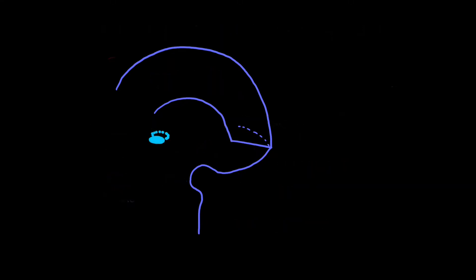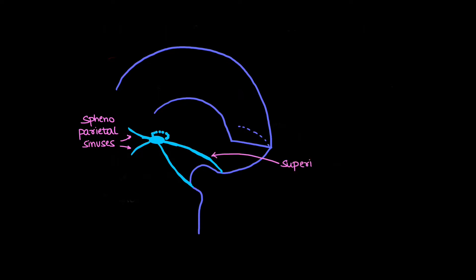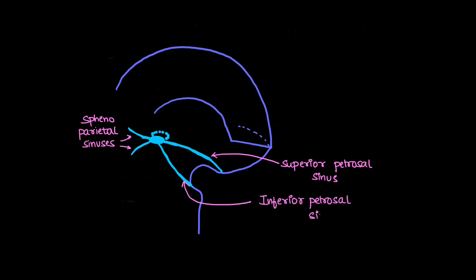Let's see the anterior set of paired venous sinuses, which will join the posterior set of paired sinuses. These are the sphenoparietal sinuses — two of them. Next, we have the superior petrosal sinuses, which join the cavernous sinus with the transverse sinus. The inferior petrosal sinus joins the cavernous sinus with the sigmoid sinus. All of these are paired, with right and left sets of each.